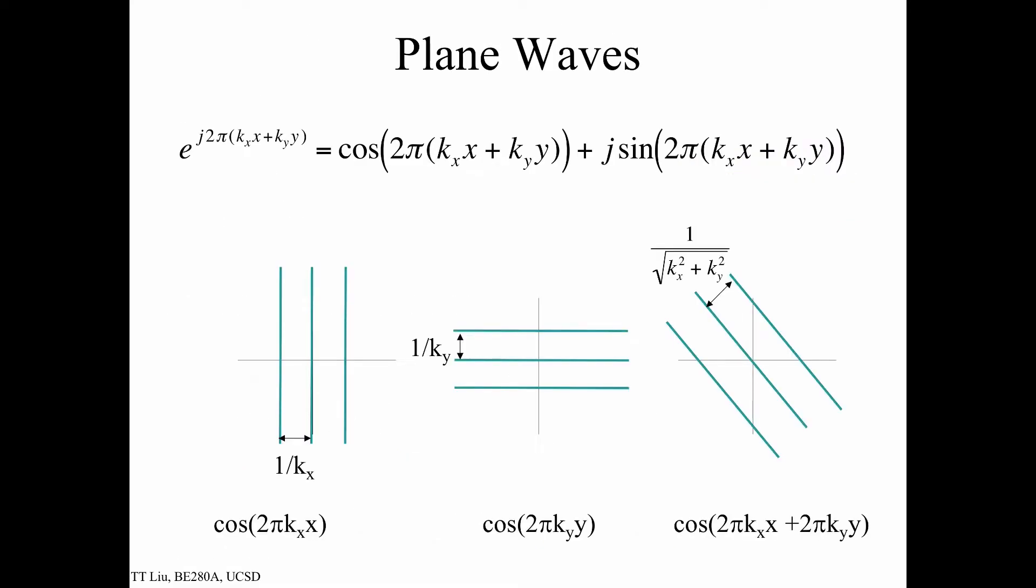Let's take a closer look at this complex exponential. Once again, using Euler's formula, we can write this as the sum of the cosine 2π(kx·x + ky·y) plus j times sine 2π(kx·x + ky·y), and then let's look at just this cosine term.